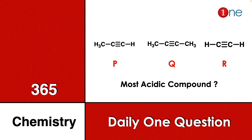Welcome to One Chemistry. This is the 365 Chemistry series — one daily question for you. Here, three different alkynes are given: the first is propyne, the second is butyne, and the third is acetylene, labeled as P, Q, and R. Among the three, you have to find the most acidic compound.